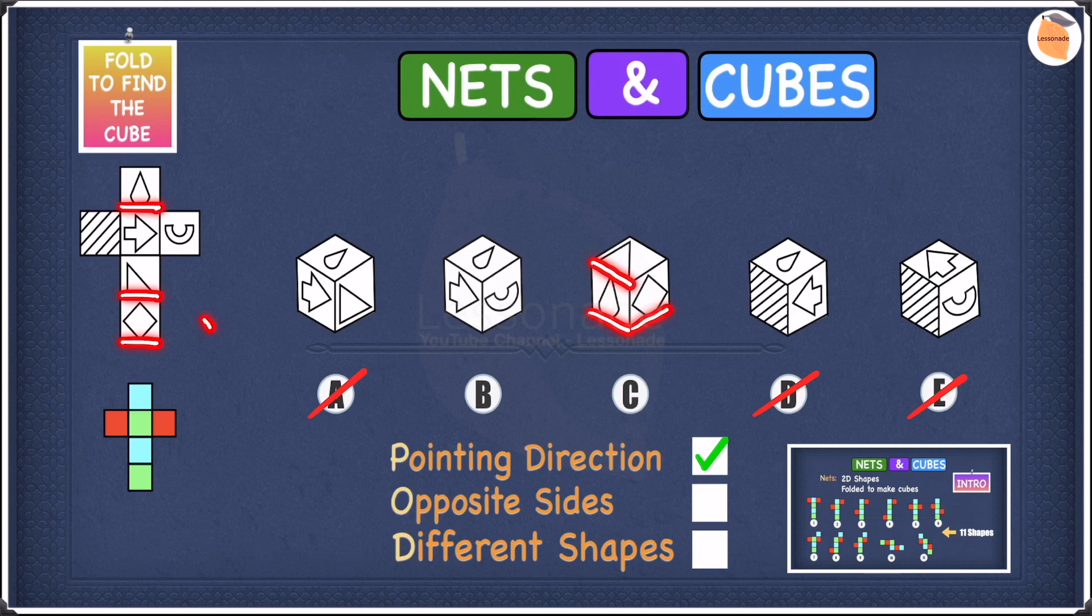Let's have a look where these shapes are in terms of opposite sides. Raindrop at the top, then near the bottom we have the triangle, and at the bottom we have the diamond.